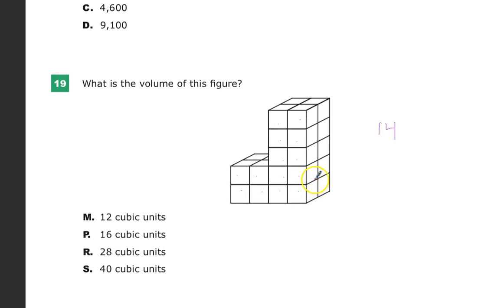Remember, I said I had the same amount behind it. You could do times 2, or if you'd rather add, that's fine. Plus 14. You get 14 plus 14 equals 28. So your answer to number 19 is R.